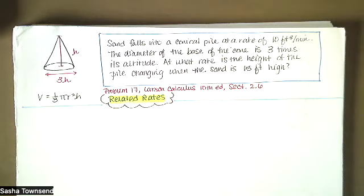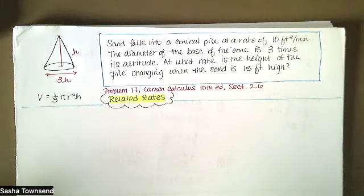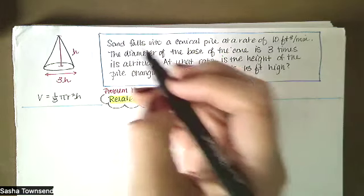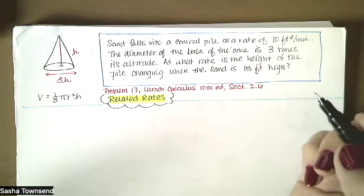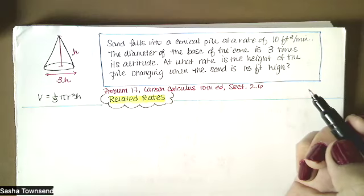When I read this problem statement, the first thing I do is look for anything that sounds like math. Anytime I see the word rate, I'm thinking of a derivative. Anytime I see words from geometry or particular numbers, I know I probably want to write that down. So let's read this statement again and try to infer what is given in terms of symbols.